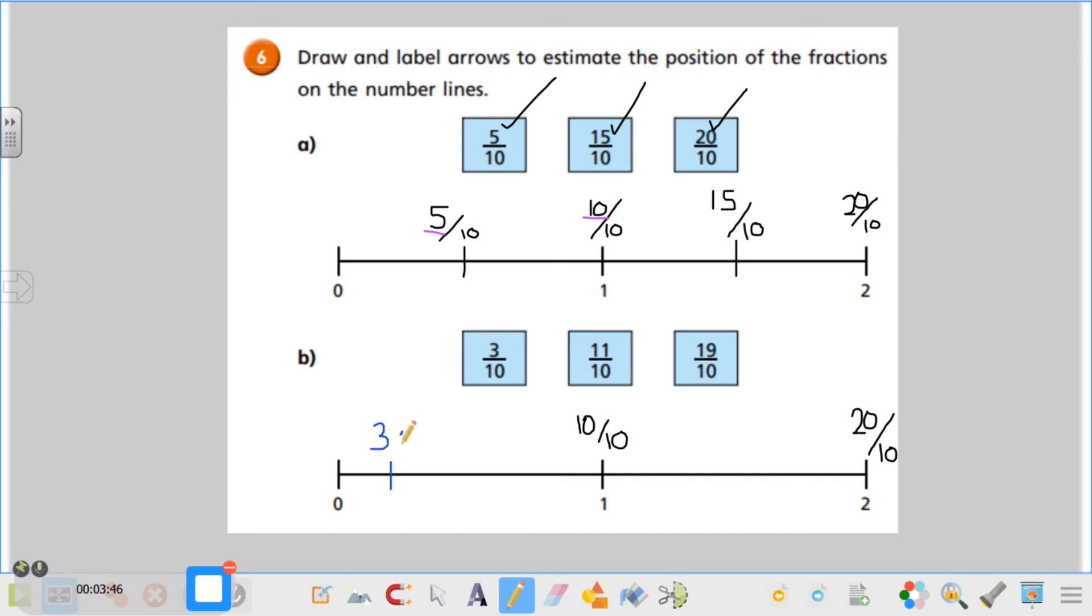I'm going to plot my 3 tenths here because on a normal number line that is where I would find my number 3, around here. Remember it's just an estimate, so it's just a guess as to where you think it would be, it doesn't have to be exactly right. So that's my 3 tenths. Now I'm on to 11 tenths. If this is 10 tenths, I know that 11 comes after the number 10, so that must mean that 11 tenths must be here.